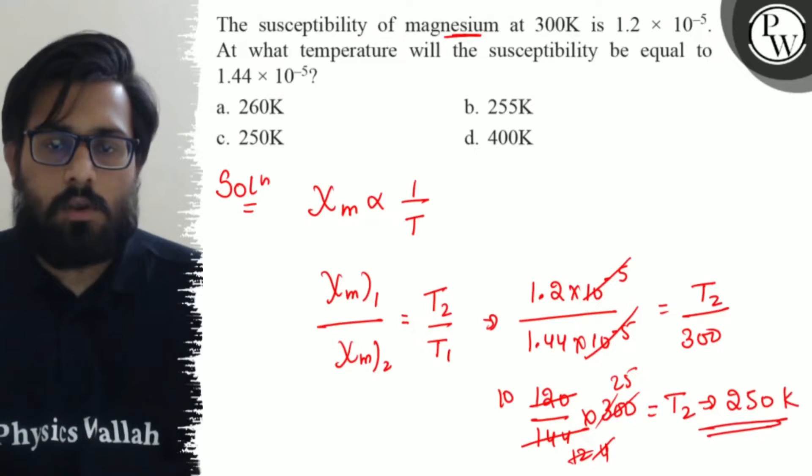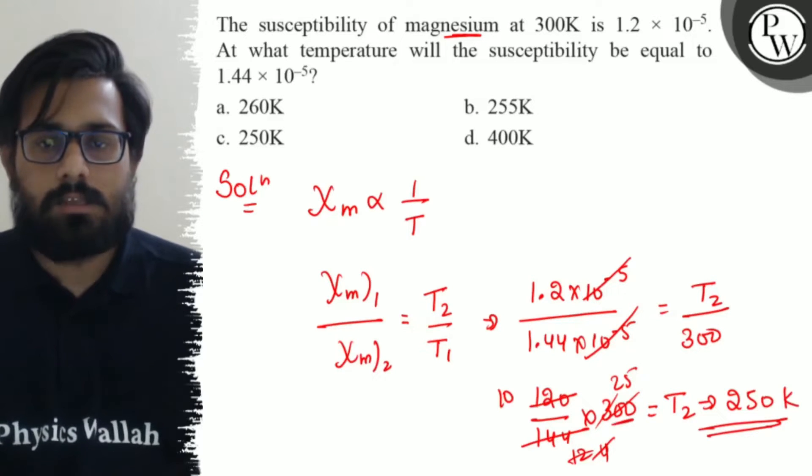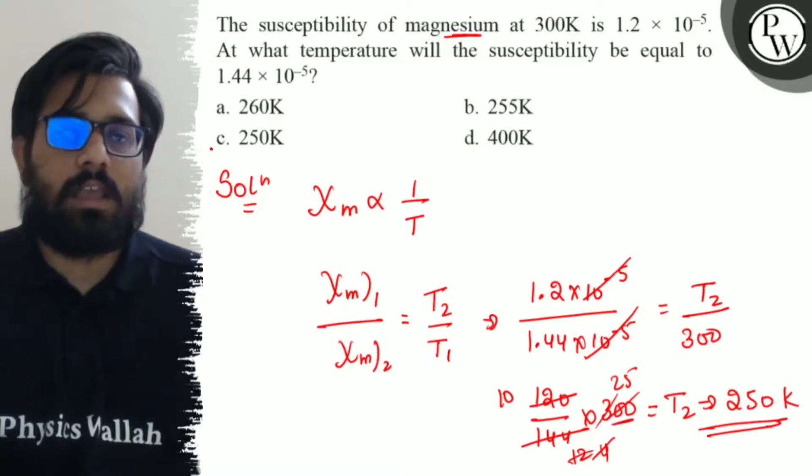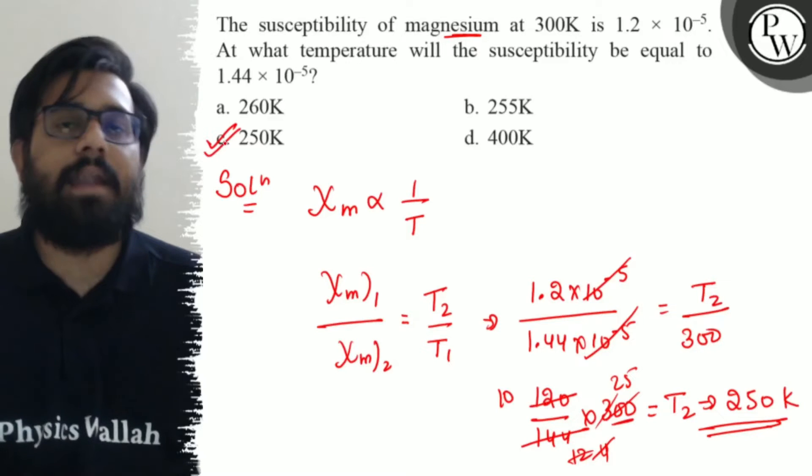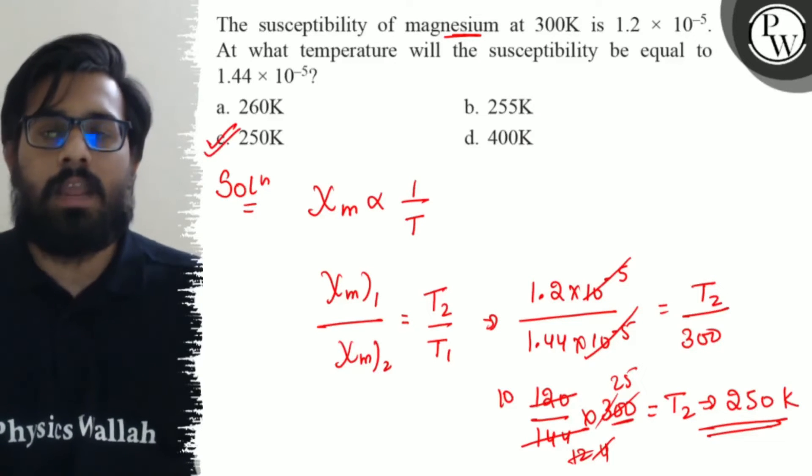3 fours are 12, and 4 into 25 is 100, cancel out. So 250 Kelvin is the right answer, which we get in option C, and hence our option C is absolutely correct.